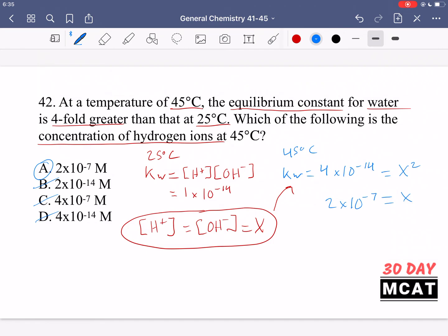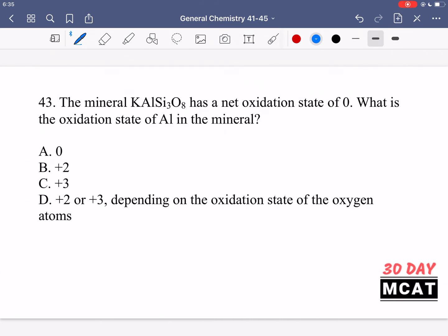A is the concentration of both hydrogen ions and OH minus and that's what we were asked to look for. In question 43 it says the mineral with this molecular formula has a net oxidation state of 0. What is the oxidation state of aluminum in the mineral?